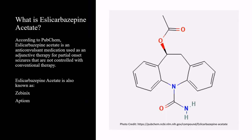According to PubChem, eslicarbazepine acetate is an anticonvulsant medication used as an adjunctive therapy for partial onset seizures that are not controlled with conventional therapy. Eslicarbazepine acetate is also known as Zebenix and Aptiom.